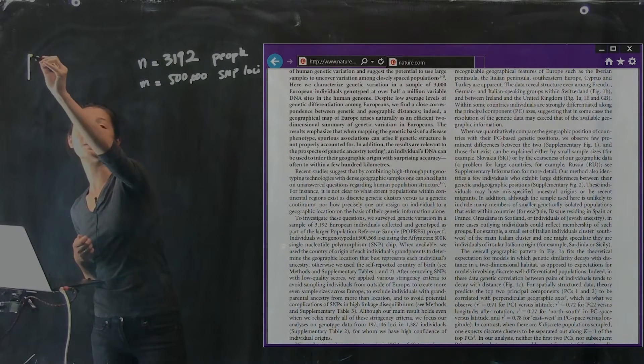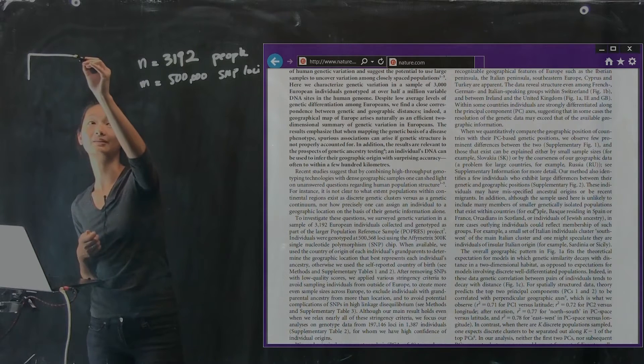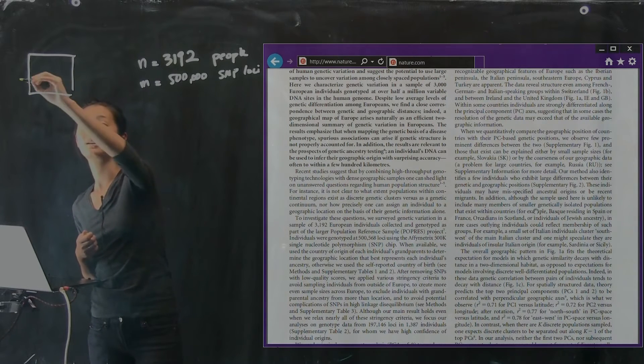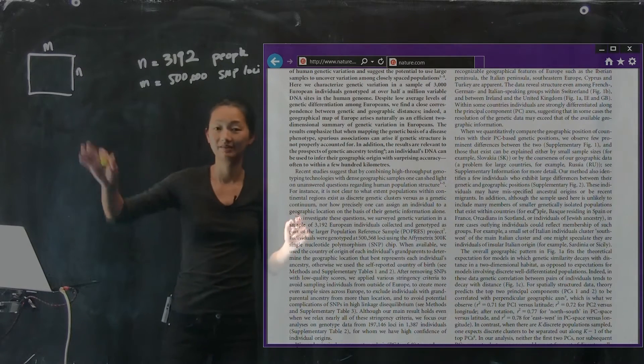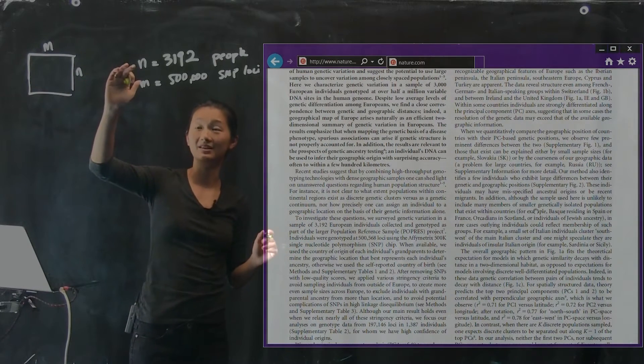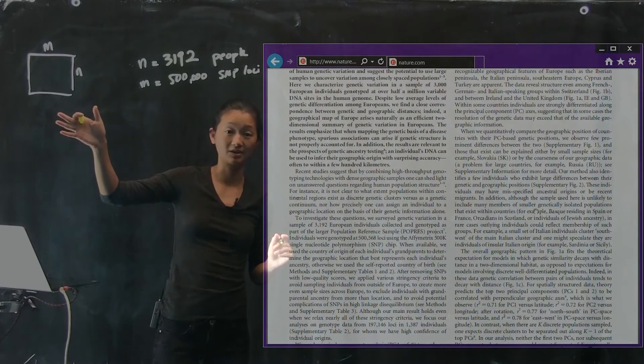And their data matrix looks like the following, where this is M and this is N, right? Not to scale, because obviously M is much larger than N. That's their data matrix.